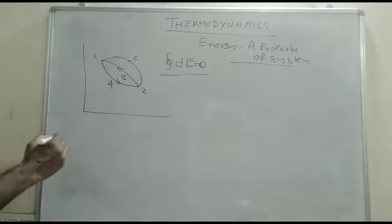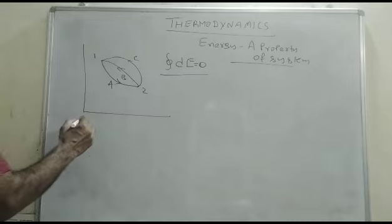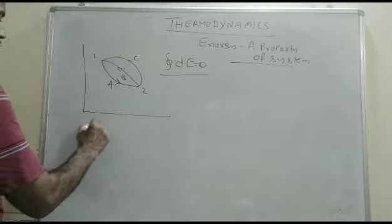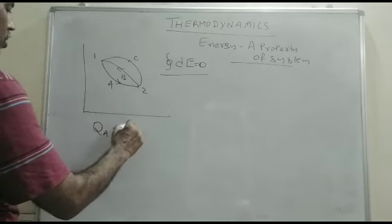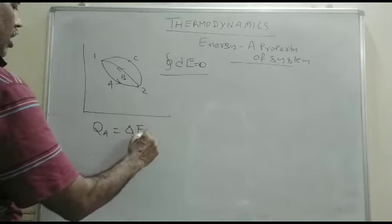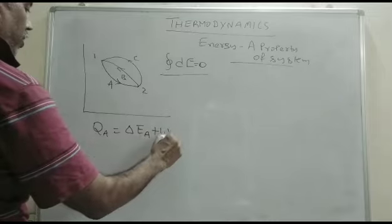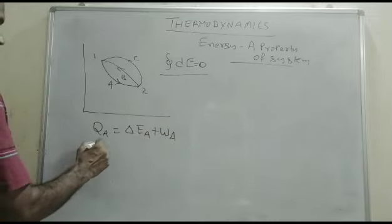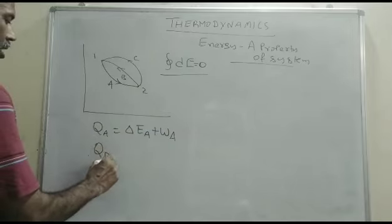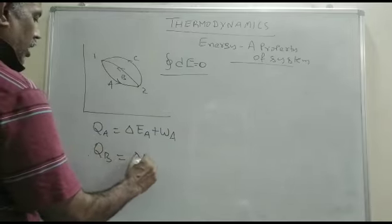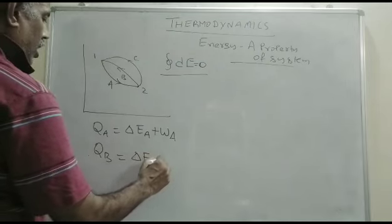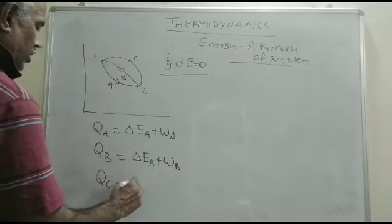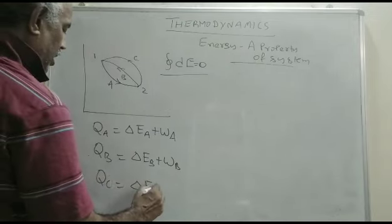First of all, apply the first law from state 1 to state 2. Q_A is equal to δE_A plus W_A. And Q_B is equal to δE_B plus W_B. Q_C is equal to δE_C plus W_C.